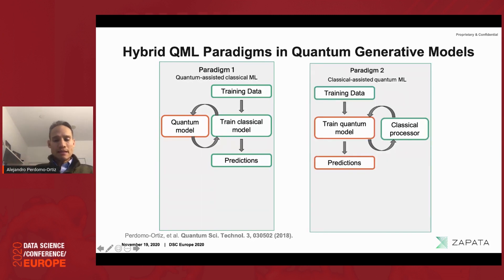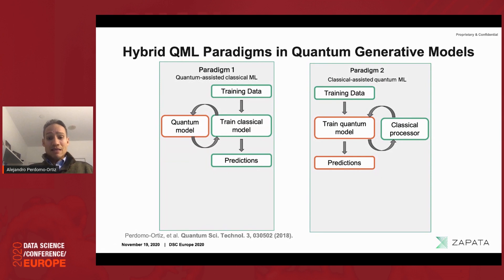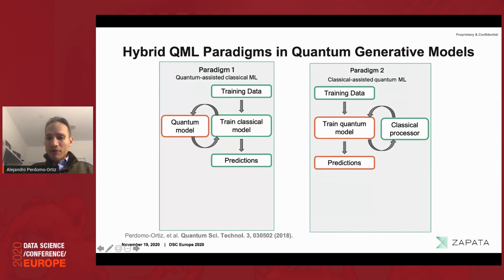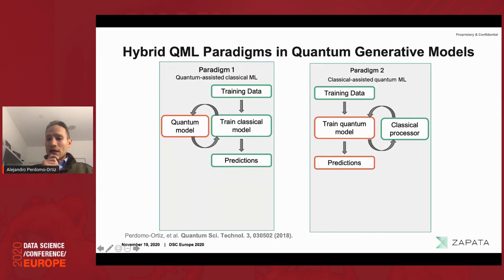In the second paradigm — the one I find most interesting — the quantum model itself is the machine learning model. You can still use classical computation to train, but the heavy lifting is the quantum model in the middle and the prediction. You can still make calls to the classical processor for simple multiplications or sampling operations, but the core model is quantum. We'll deep dive into this paradigm with a specific example.